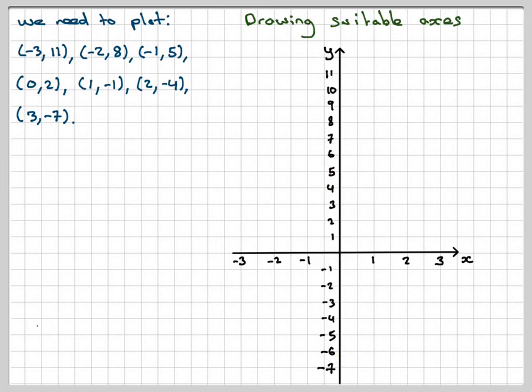And then I need to plot the points: minus 3, 11; minus 2, 8; minus 1, 5; 0, 2; 1, minus 1 (and minus 1 is the first one underneath the x-axis, that's a mistake sometimes people make); 2, minus 4; and 3, minus 7.